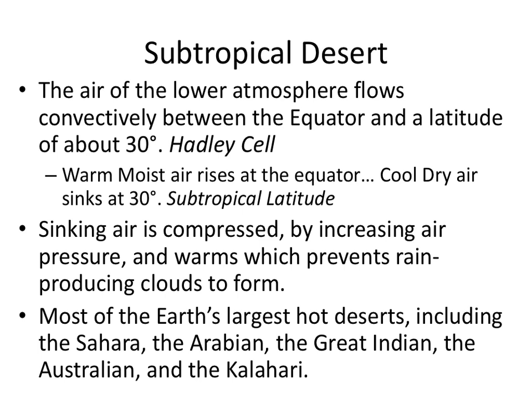It's a three-cell system; we'll just focus on the Hadley cell right now. So the warm, moist air rises at the equator and drops its precipitation there. Then as it sinks at around 30 degrees north latitude, that cool, dry air gets super warm and super dry — because sinking air is compressed, and when you compress things, they warm up. So most of the Earth's largest deserts — including the Sahara, the Arabian, the Great Indian, and the Kalahari — are located at around 30 degrees of latitude.